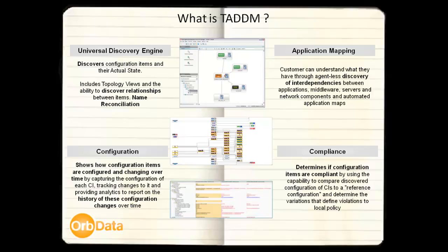TADM can then generate a map that shows how these items are all interrelated. TADM also shows how a configuration item, often referred to as a CI, is configured and whether it is in compliance with company rules and policies. TADM also maps application dependencies, performs analytics via reporting, and reconciles resources found as required.